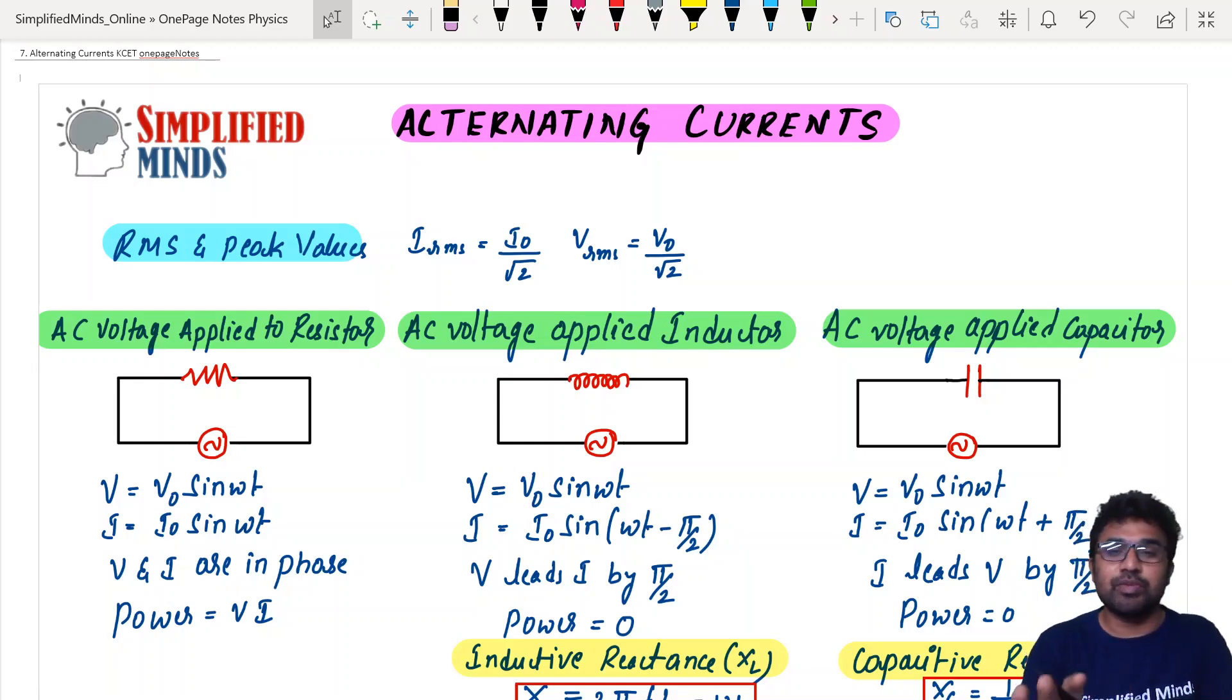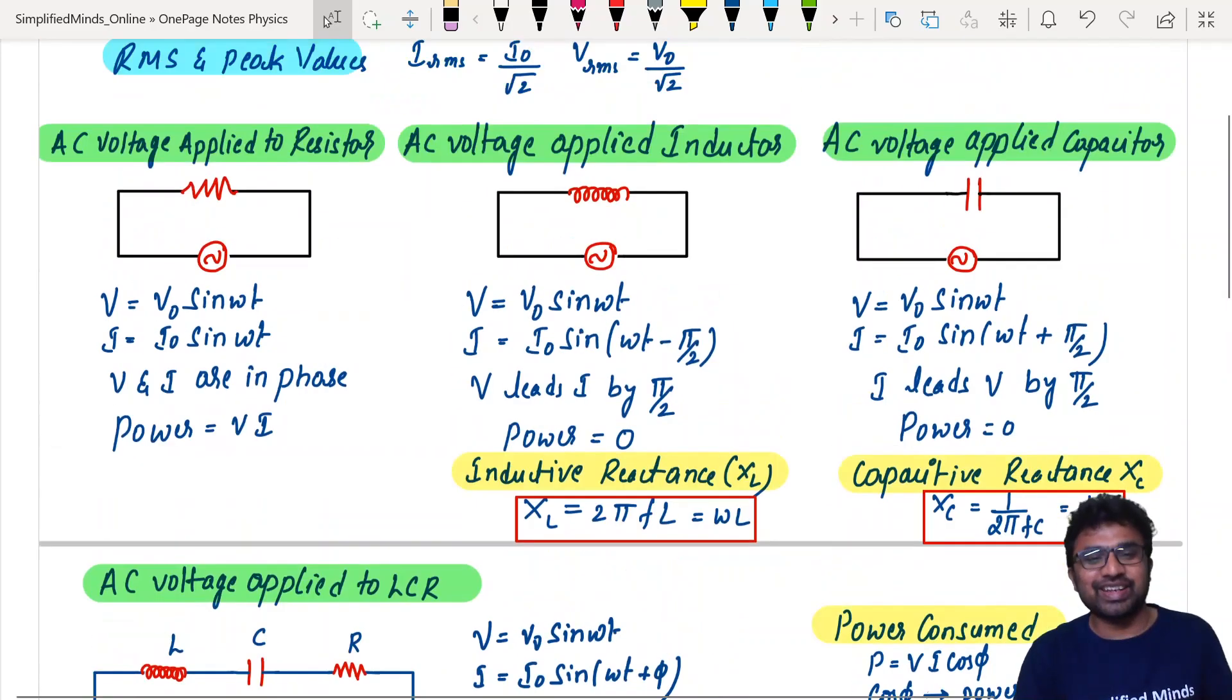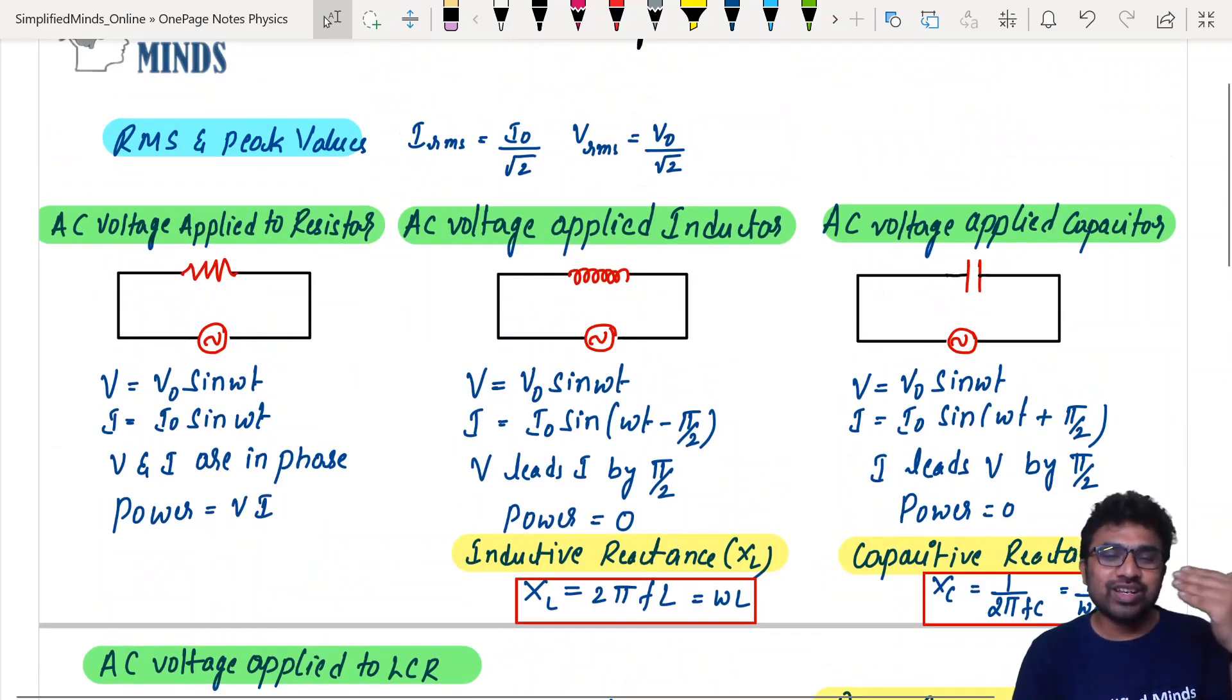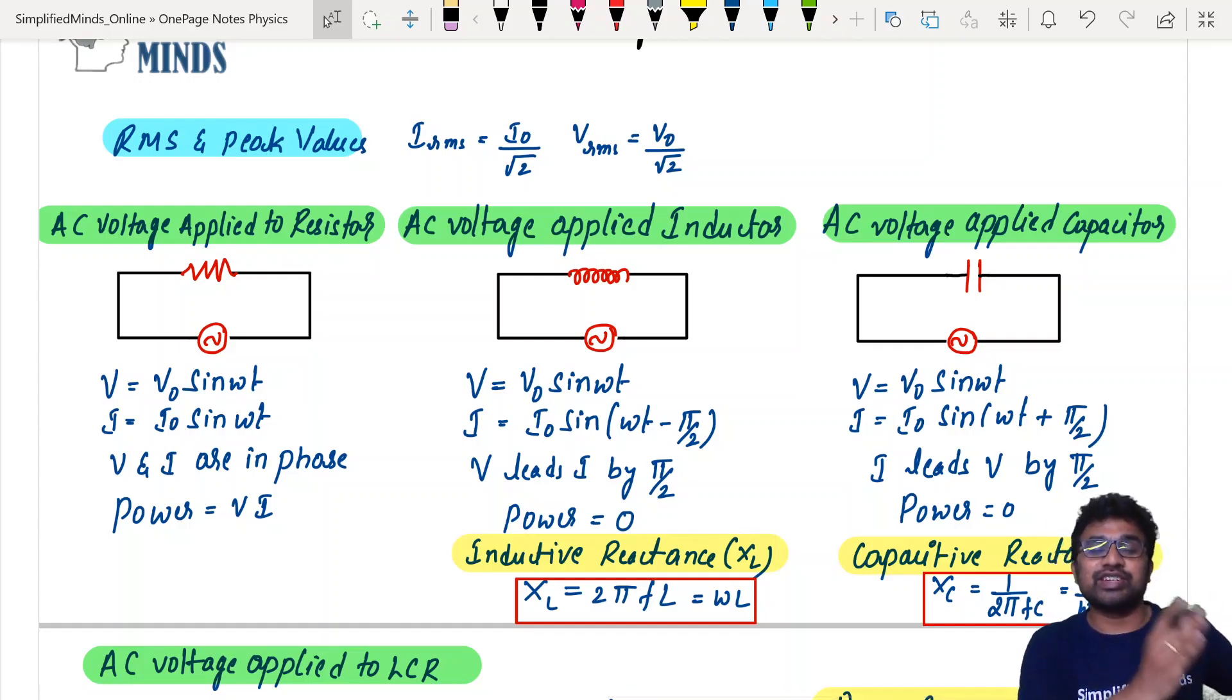All the links will be in the description box. This is the first concept of alternating currents. This is just a formula based question. Even for your board exam it's formula based. I am going to teach all the derivations like LCR, voltage applied to inductors, voltage applied to capacitor, all the derivations I have already taught you when I was teaching for your board exams.